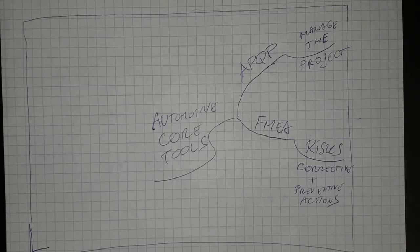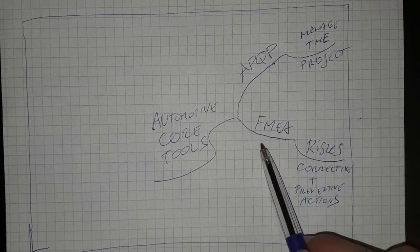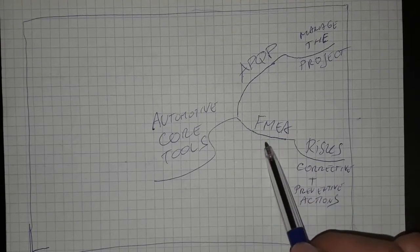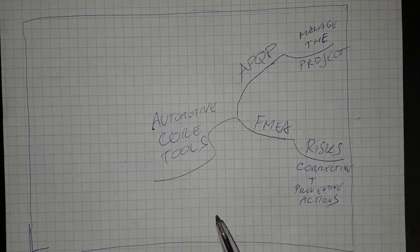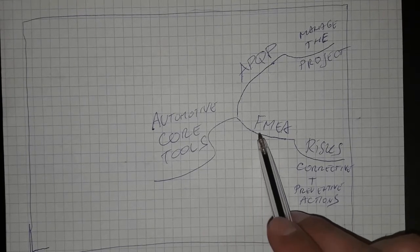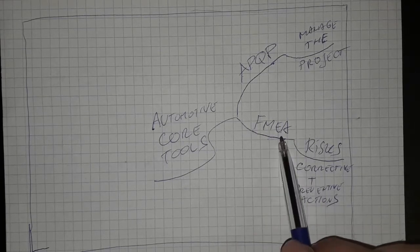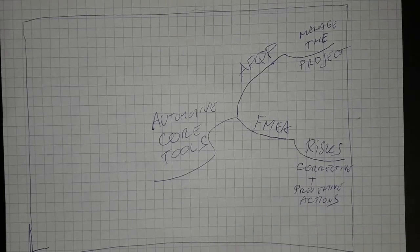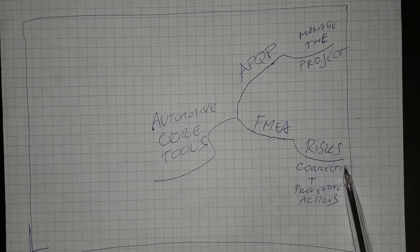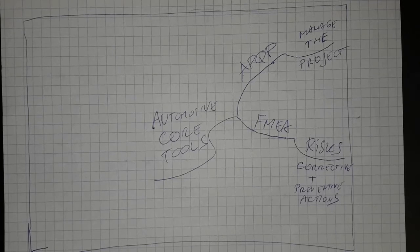FMEA can be a process FMEA, a design FMEA, a logistics FMEA, or a system FMEA. There are many different analyses, but this is one of the core tools to manage the risks, try to prevent them, and correct things if something really wrong happens.